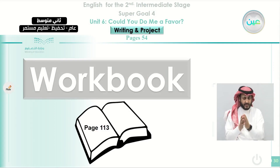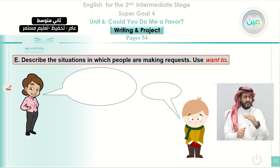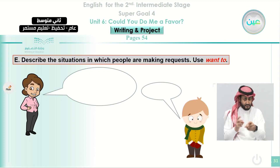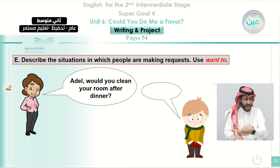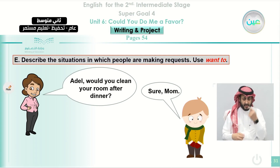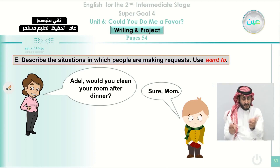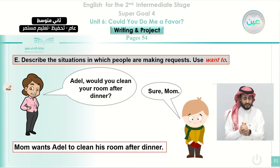Now we go to the workbook, page 113, to answer some exercises. Here we have Exercise E. You need to describe the situation in which people are making requests, using 'want to'. Here we have a conversation: Adil's mother is asking her son, 'Would you clean your room after dinner?' Adil says, 'Sure, mom' — that means he is accepting. Our role is to report this request. We can say: 'Mom wants Adil to clean his room after dinner.'